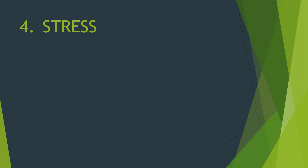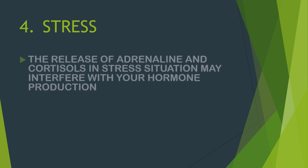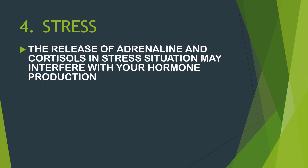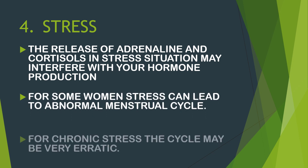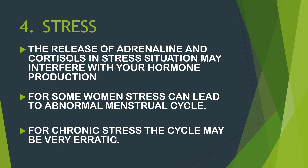Stress is another cause of irregular menstruation. The release of adrenaline and cortisol in stress situations may interfere with hormone production. For some women, stress can lead to an abnormal menstrual cycle, and for chronic stress, the cycle may become very erratic.